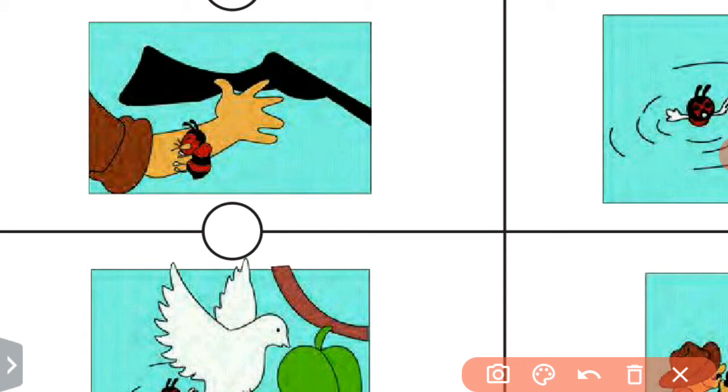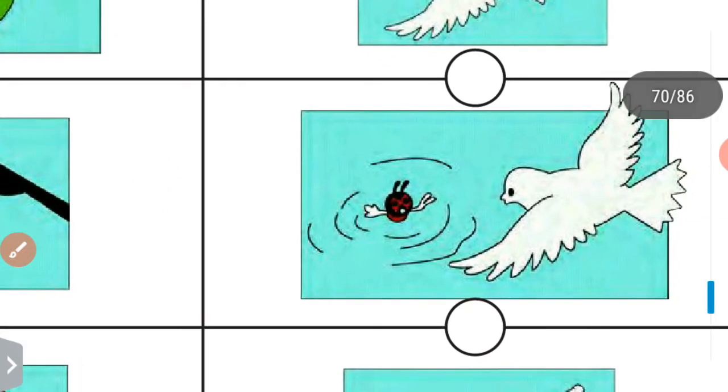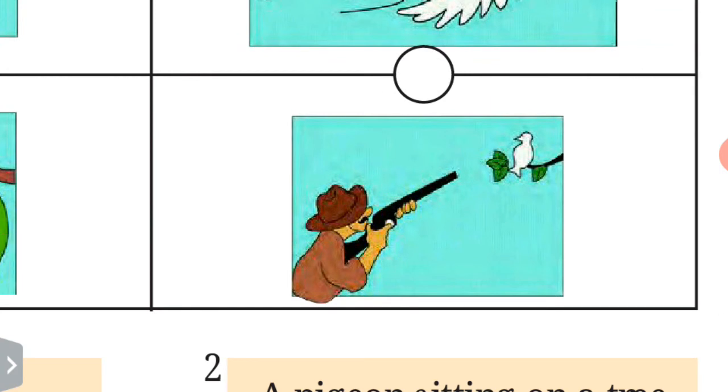The ant climbs the hunter's hand and stung it to cut his hand. So the gun misses shooting the target.